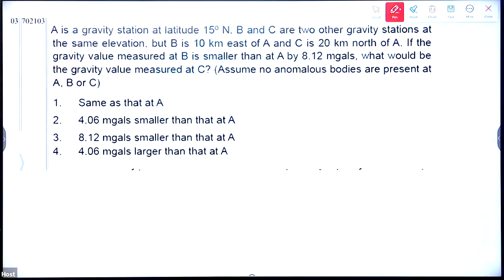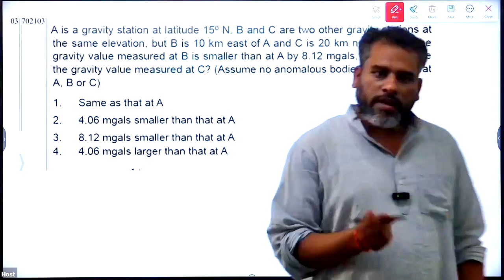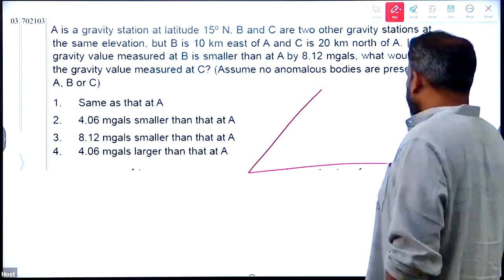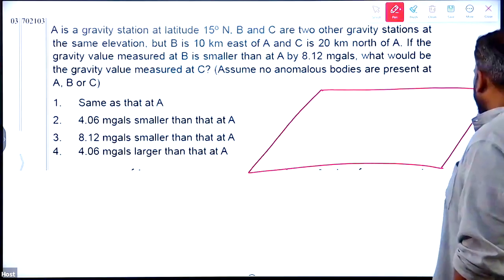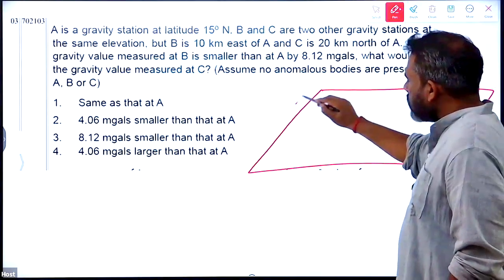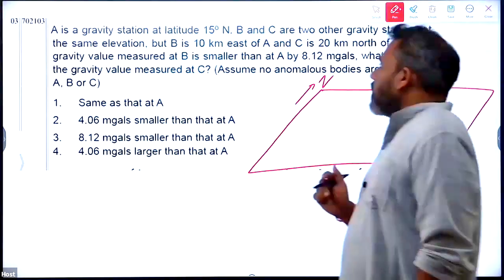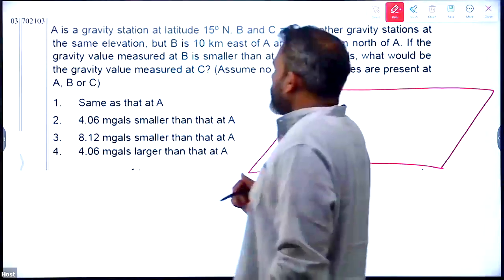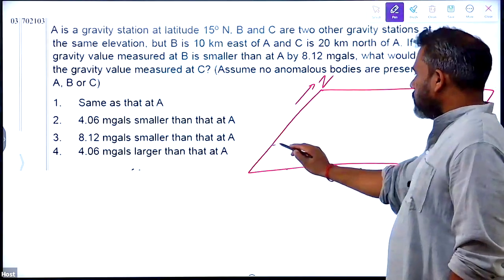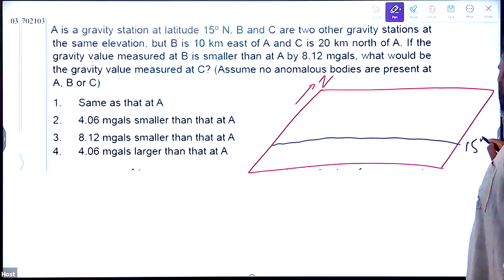A is the gravity station at the altitude of 15 degrees north. So, let's make a 3D diagram. Assume this is north. A is a gravity station located at 15 degree latitude. So, let's say this is my 15 degree latitude. So, this is 15 degrees north.